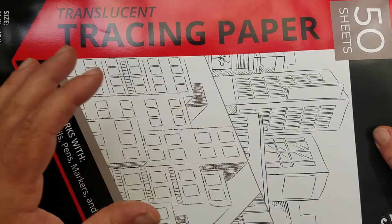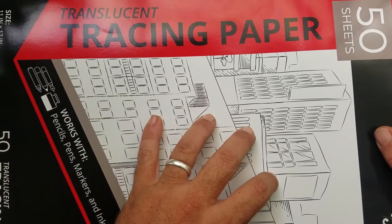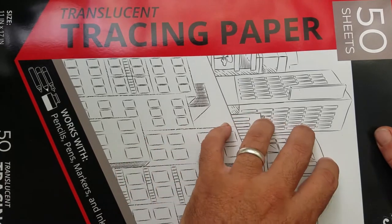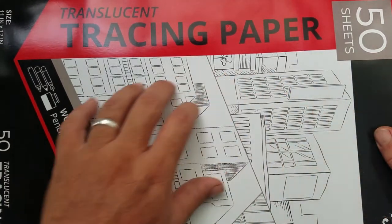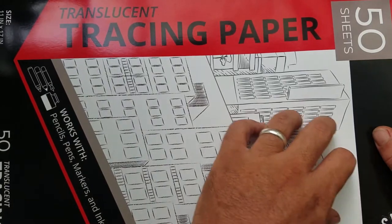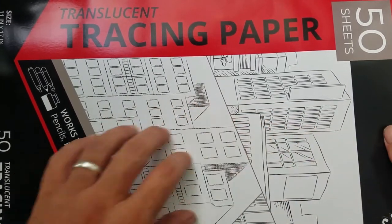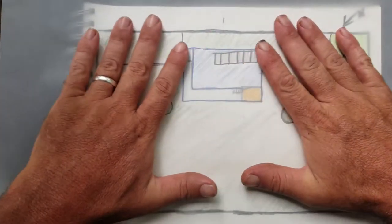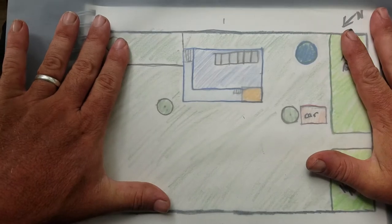We want to be able to trace over our existing base map. Now another alternative is just to make copies of your base map and draw right onto that. But if you don't have copies or have tracing paper at your disposal, this is a great way to do our next layers of our design. So I'm going to overlay my tracing paper onto my previous base map design that we made.